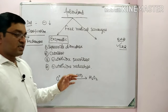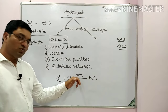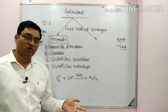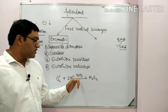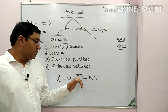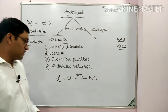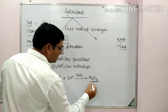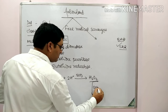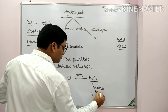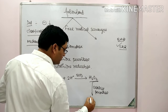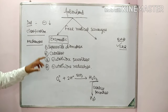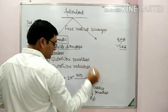Superoxide dismutase requires manganese, or copper and zinc, for its action. There are two types: cytosolic superoxide dismutase requires copper and zinc, while the mitochondrial form requires manganese. The H₂O₂ generated in this reaction is then converted into water by the action of catalase and peroxidase.